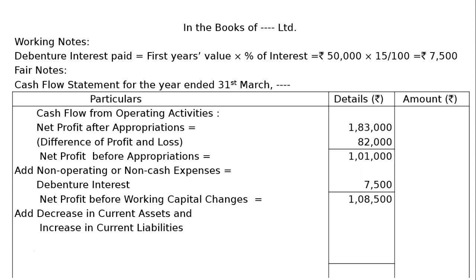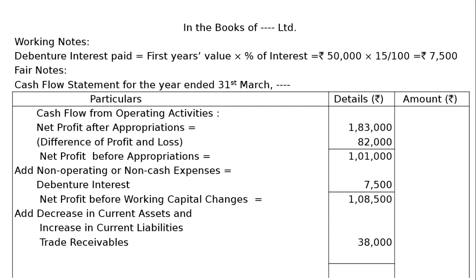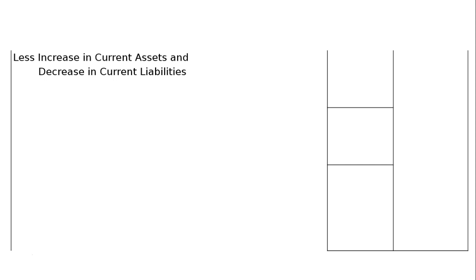Now we add decrease in current assets and increase in current liabilities. First item: trade receivables — last year it was ₹70,000, this year it became ₹32,000, so it decreased. Decrease in trade receivables means cash came in — operating inflow. Next, trade payables increased from ₹1,10,000 to ₹1,50,000, an increase of ₹40,000 — liability increased, so it is an operating inflow. Adding these: ₹1,08,500 plus ₹78,000 gives ₹1,86,500. Then we deduct increase in current assets and decrease in current liabilities.